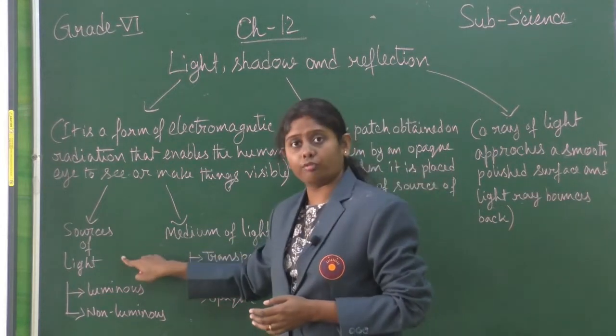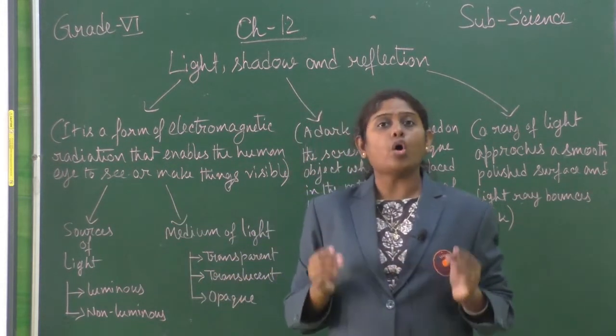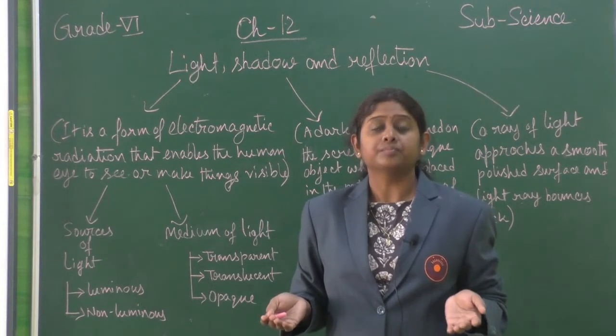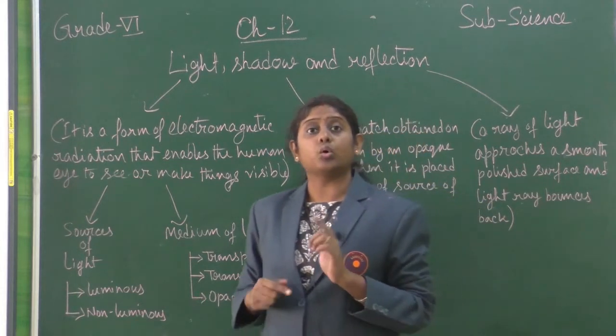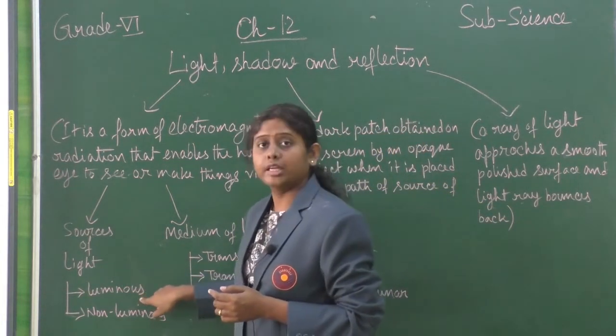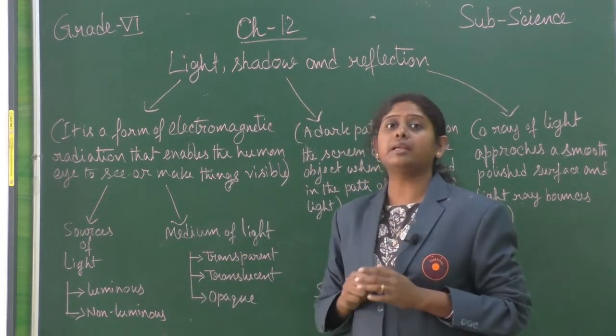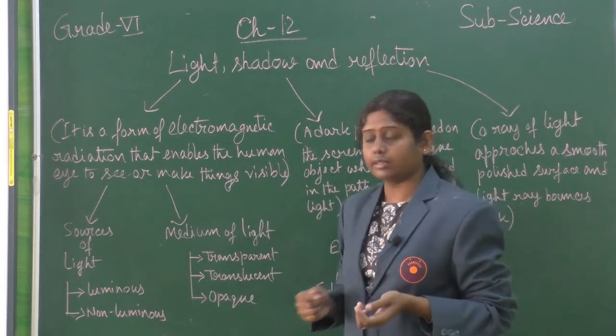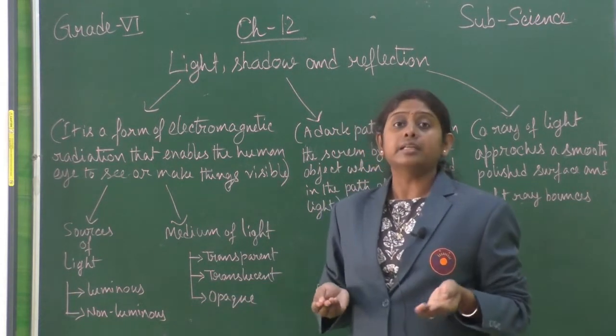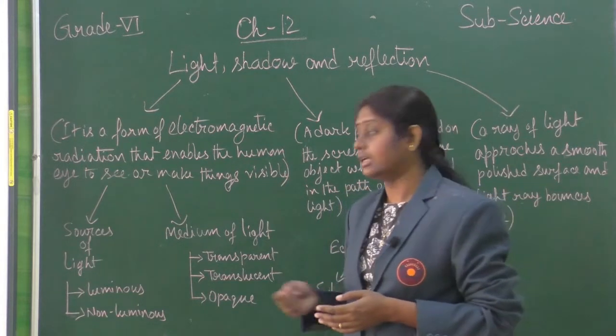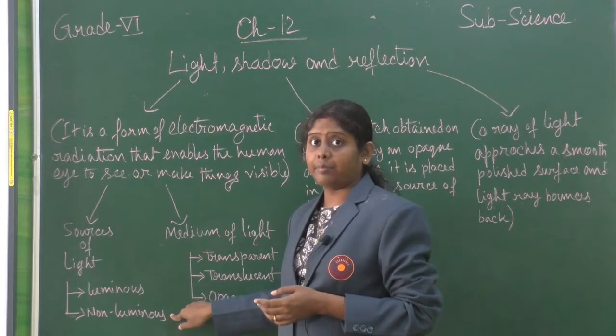We call them sources of light. The sources of light can be natural or man-made. Similarly, objects which can emit light on their own we call luminous objects, and objects which cannot emit their own light we call non-luminous objects. Examples: the sun and bulb are luminous objects, and the earth and table are non-luminous objects.